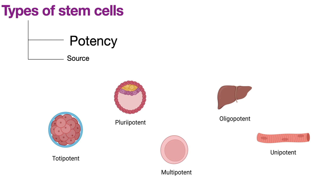The next is pluripotent stem cells. Similar to totipotent stem cells, these are also derived from the embryo but specifically from the inner cell mass of the blastocyst. These stem cells can differentiate into all cell types of the organism except for the extra-embryonic layer, which is the placenta, since the trophoblast cells give rise to the placenta and the inner cell mass has lost this ability.